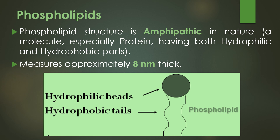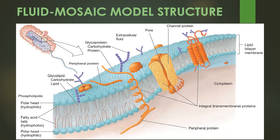Because of the presence of both hydrophobic and hydrophilic parts in the phospholipids, the phospholipid is referred to as amphipathic in nature. The phospholipids measure about 8 nanometers in thickness, and this is the fluid mosaic model structure of the plasma membrane.